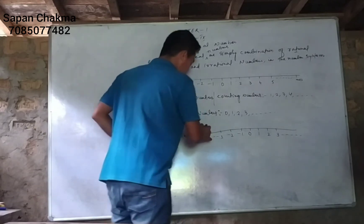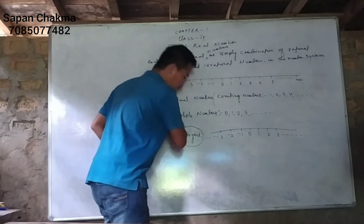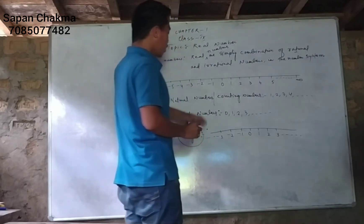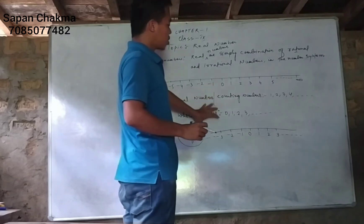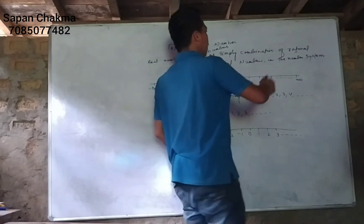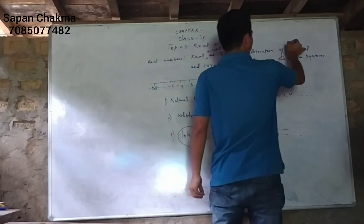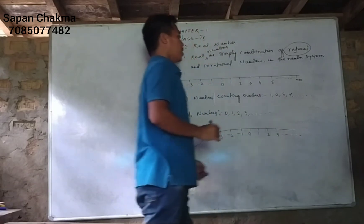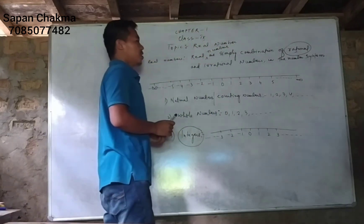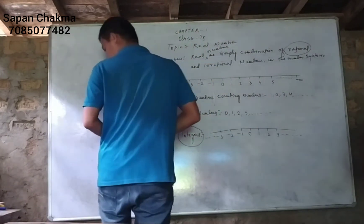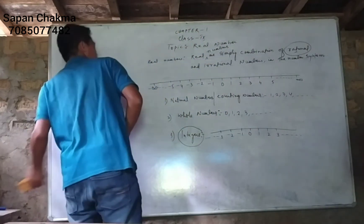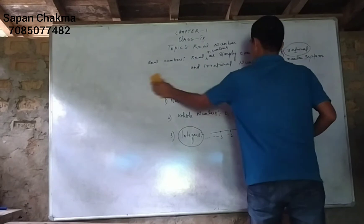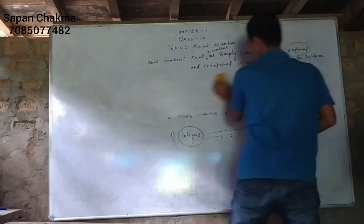The whole number extended with negative values is the integer number. This means integers include 0, 1, 2, 3, 4, 5, 6, 7, 8, 9, and also negative values. The whole number should be evolved beyond 0 in terms of value.